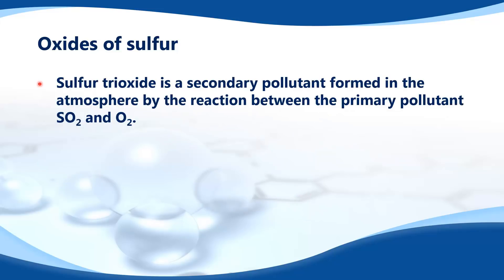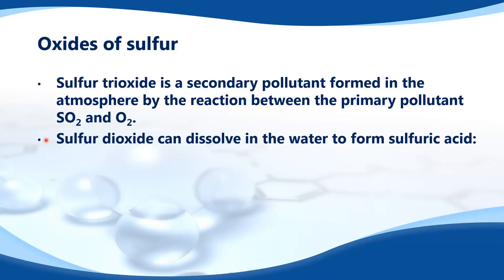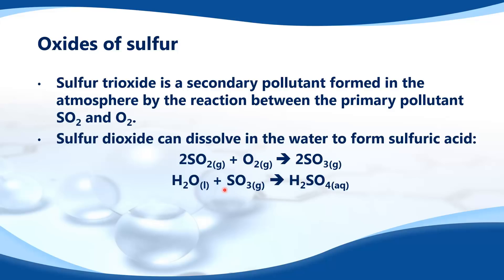Sulfur trioxide is a secondary pollutant formed in the atmosphere by the reaction between the primary pollutant sulfur dioxide and oxygen. Here is the equation: sulfur dioxide reacts with oxygen to give sulfur trioxide. Sulfur trioxide then dissolves in water to make sulfuric acid, which contributes to acid rain.